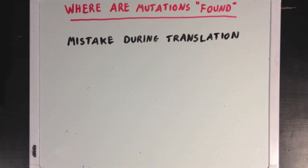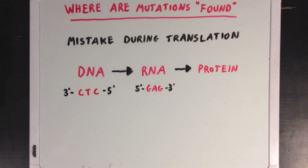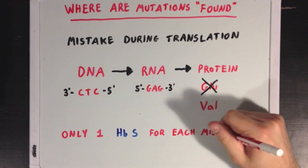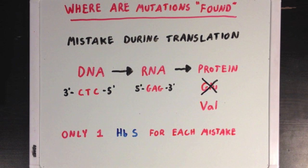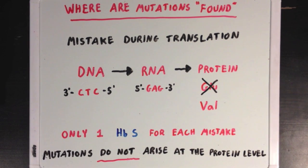First, we'll see what happens if a cell makes a mistake during translation, sticking with our example of sickle cell disease. We have a sample piece of DNA with three nucleotides from the gene coding for hemoglobin. This DNA is transcribed to form the complementary RNA sequence GAG, which would normally correspond to a glutamate residue during translation. But a mistake during translation might lead to a valine residue being translated instead. However, if a mutation happens during translation, the cell will only produce one mutated hemoglobin per mistake. Since cells are making tons and tons of hemoglobin, just one mutated protein might not have that big of an effect on the cell.